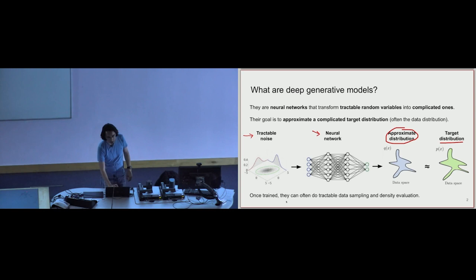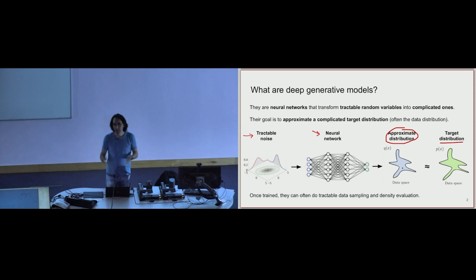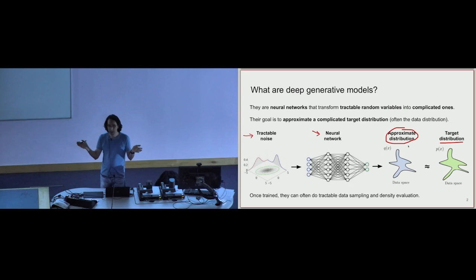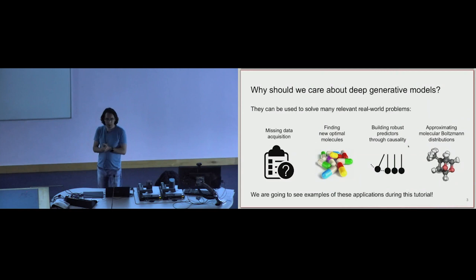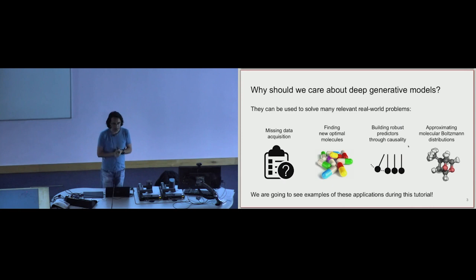You can fit these models by optimizing the parameters of your neural network. Once you have trained these models you could do things like evaluating the density — you may have access only to data but want to evaluate the density of this approximate distribution given by the generative model — or you could generate IID data. They have many useful applications, and today we will discuss different ways in which deep generative models can be used in real-world applications, specifically with connection to healthcare and biology.